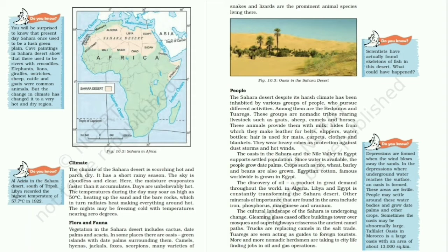They wear loose and light cotton clothes that protect them from dust and hot winds. Agriculture is practiced near water sources like the oases in the Nile Valley. The farmers here are known as felahin. They grow date palms and other crops like rice, maize, barley, beans, and wheat, as well as vegetables and fruits like figs, olives, and apricots. Cotton is grown in Egypt and is famous worldwide. People do not move from place to place in these agricultural areas.